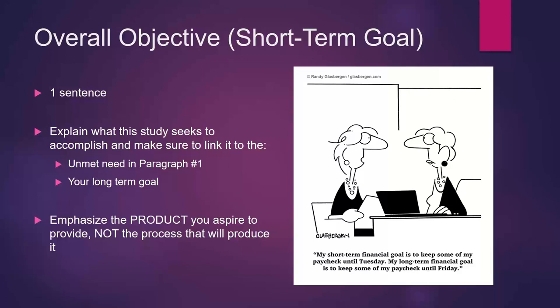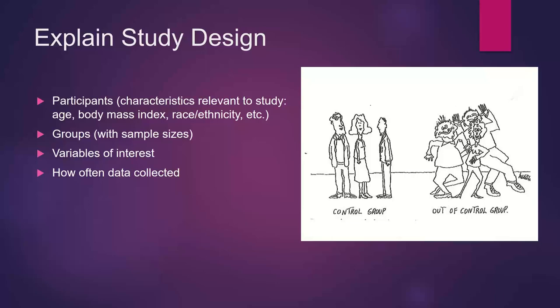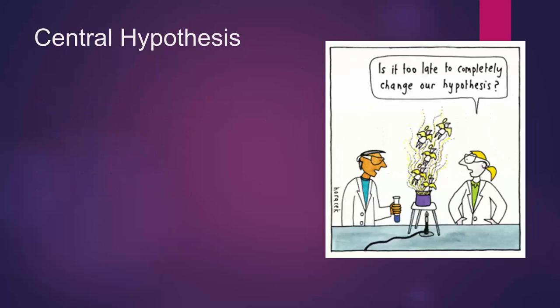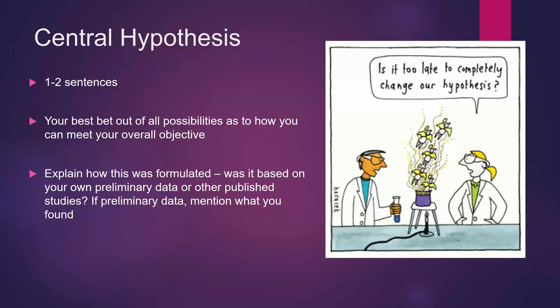Then explain the study design. Discuss anything about participants that are relevant to the specific aims — for studying blood biomarkers, typically include age, body mass index, and other covariates in your analyses. Explain your groups with sample sizes, variables of interest, how often data are collected, and what kind of data are collected. Then get to the central hypothesis — take one to two sentences to explain your best bet out of all possibilities as to how you can meet your overall objective. Explain how this was formulated: was it based on your own preliminary data or other published studies? If preliminary data, mention what you found.